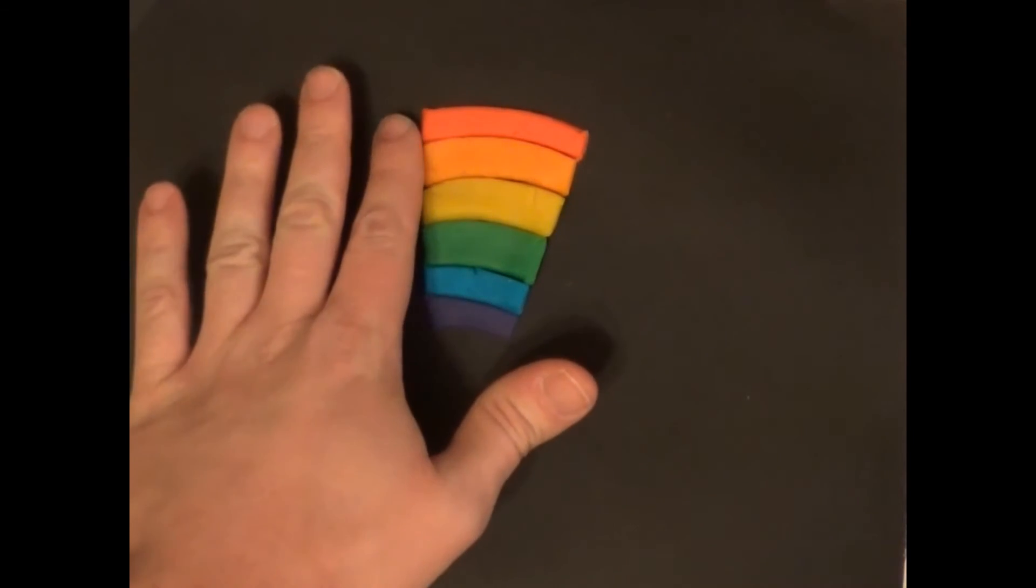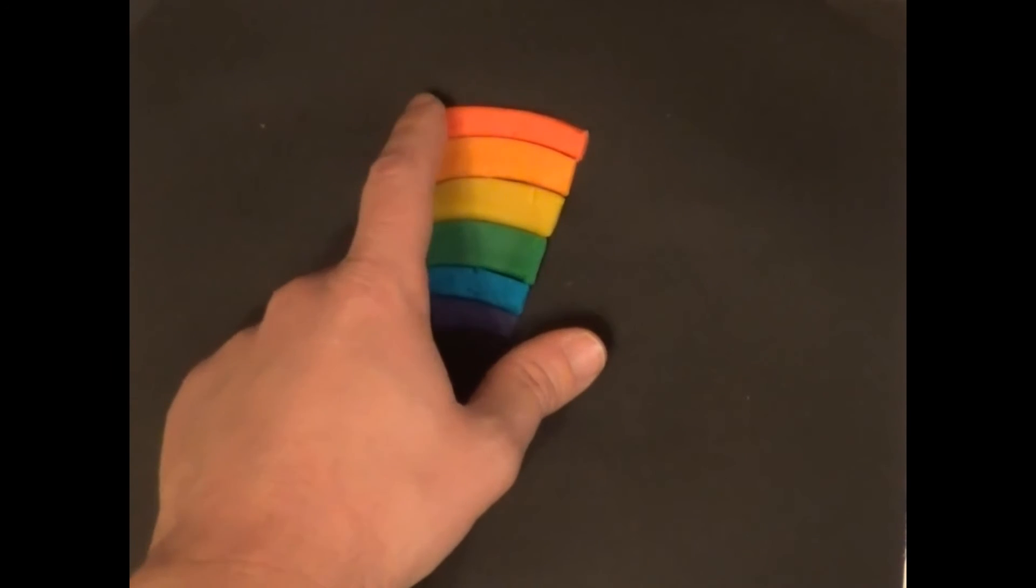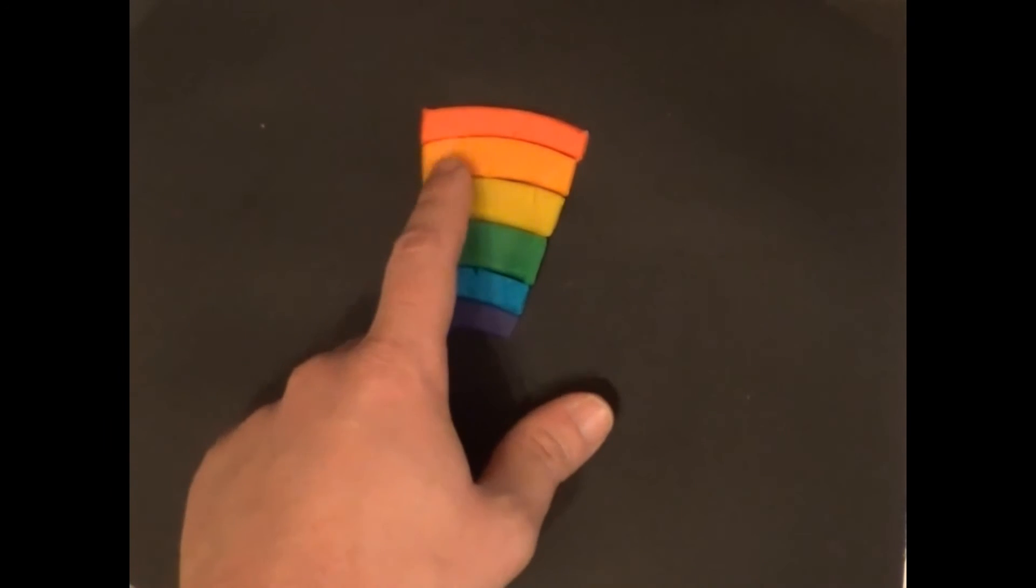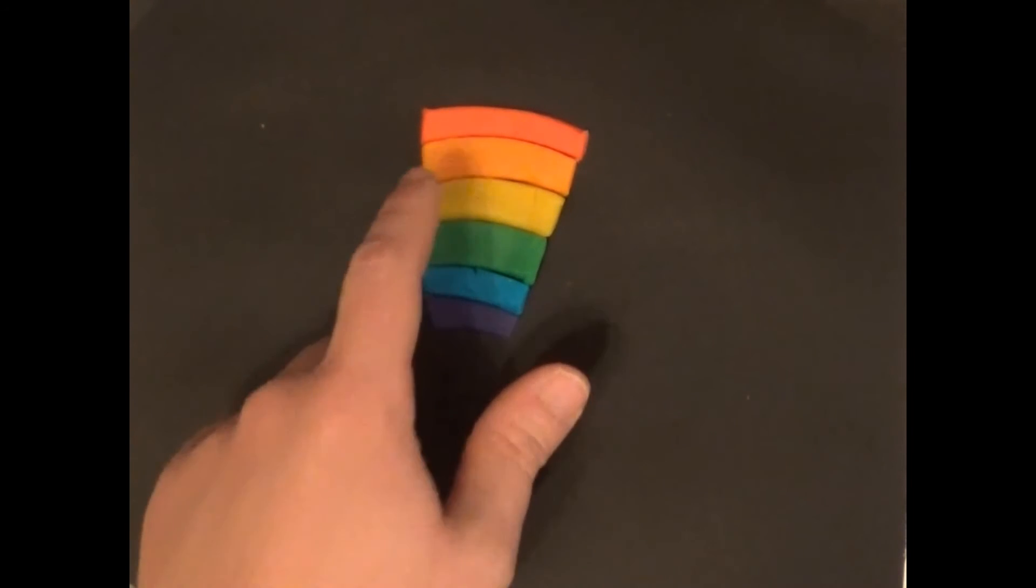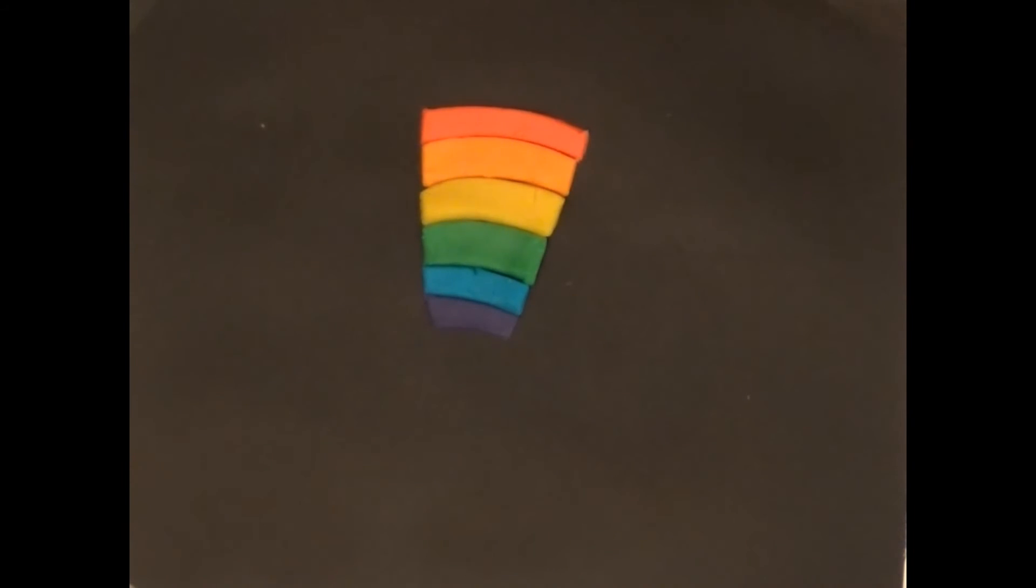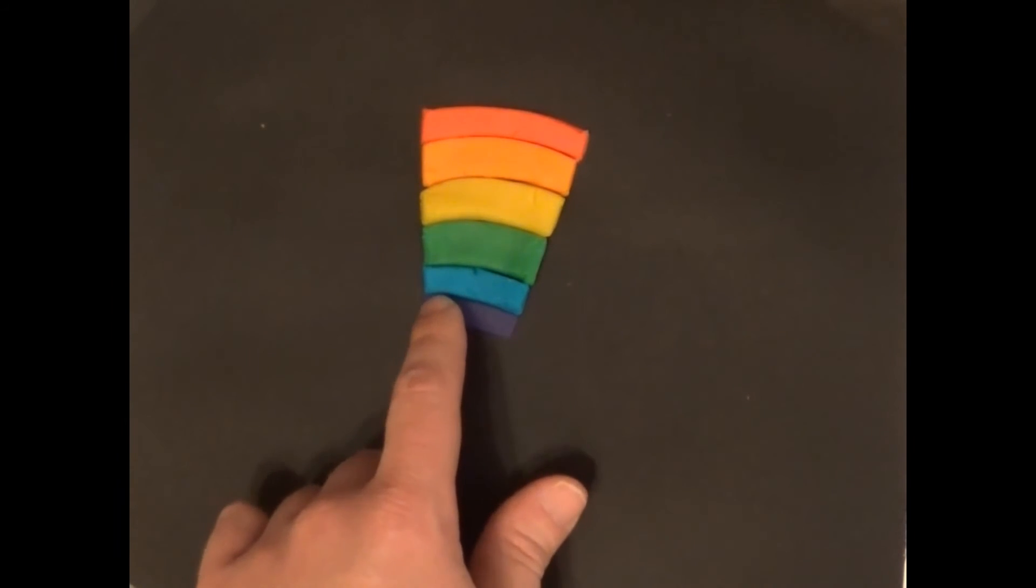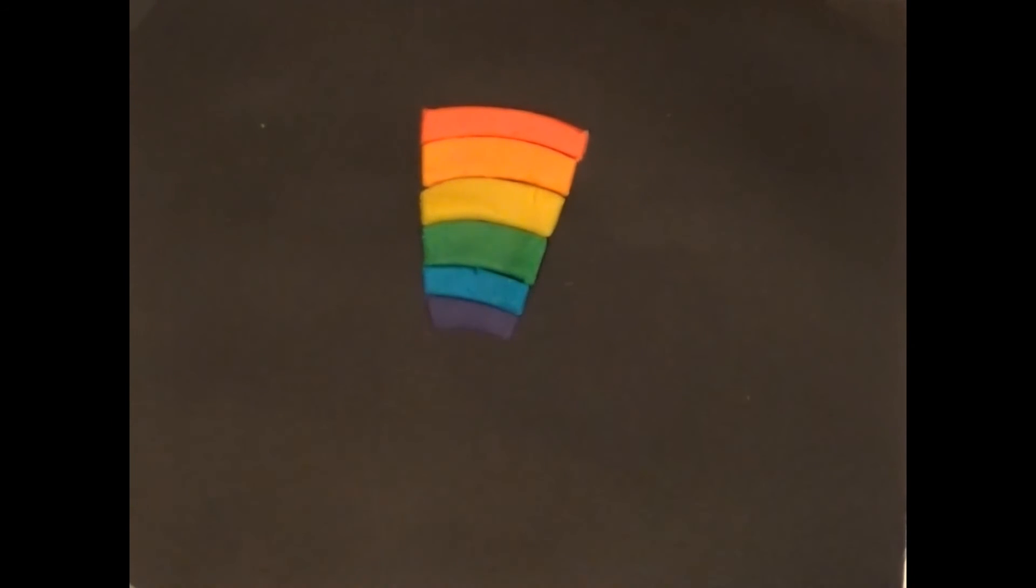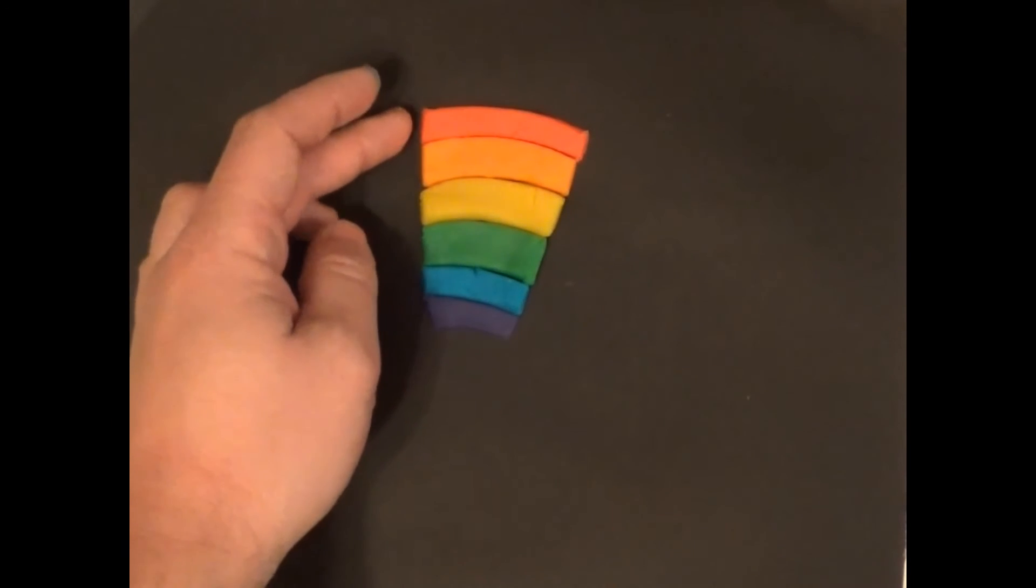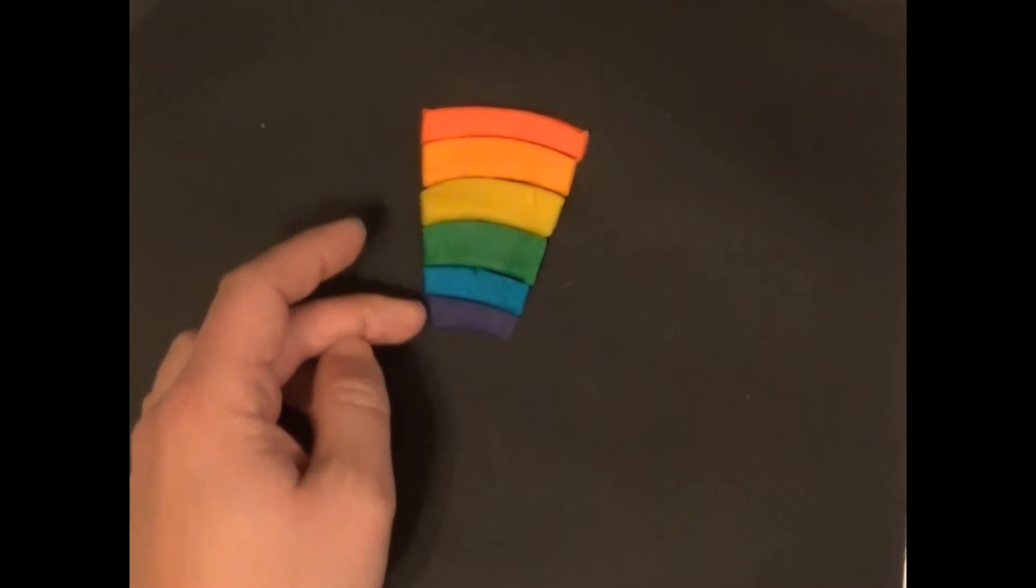And there's a way to remember the colors of the rainbow. There's the letter R for red, the letter O for orange, the letter Y for yellow, the letter G for green, the letter B for blue. Another word for blue is indigo. And then instead of purple, there's another word for purple called violet, and that's V for violet. So R-O-Y-G-B-I-V, Roy G. Biv.